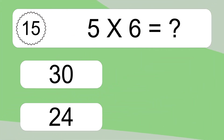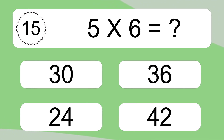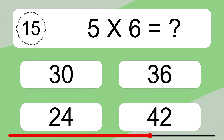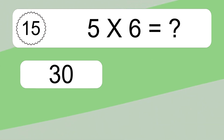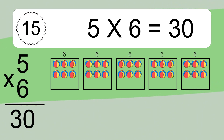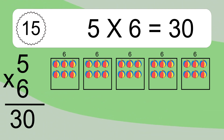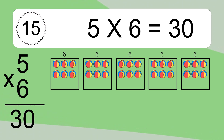Five times six equals what? Five times six equals thirty. We have five boxes, and each box has six colorful balls inside. If you count all the balls in all the boxes together, you will have five times six balls. This equals thirty balls.